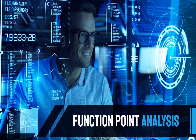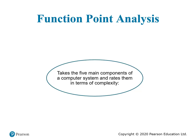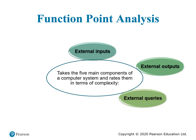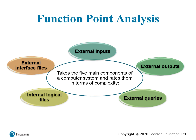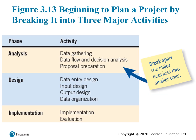During planning we need to perform function point analysis with regard to the software. Function point analysis takes the five main components of a computer system and rates them in terms of complexity. The five components are: external input, external output, external queries, internal logical files, and external interface files. We assess each based on complexity — whether they are easy or difficult to process in terms of input, output, and so on.